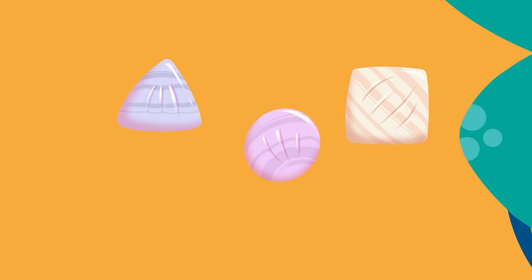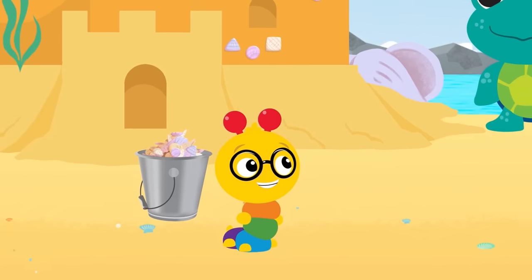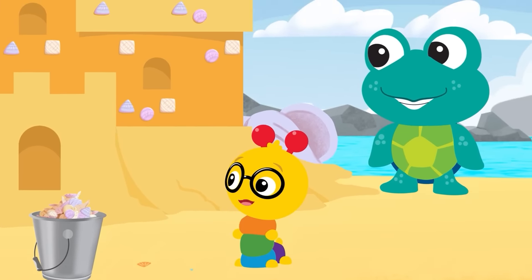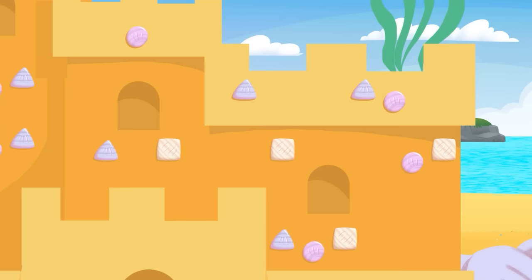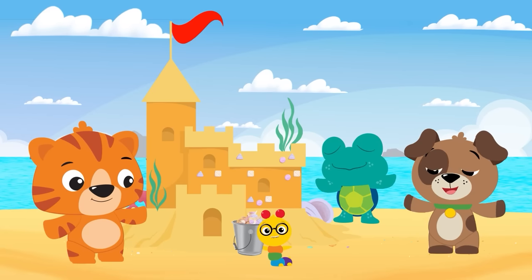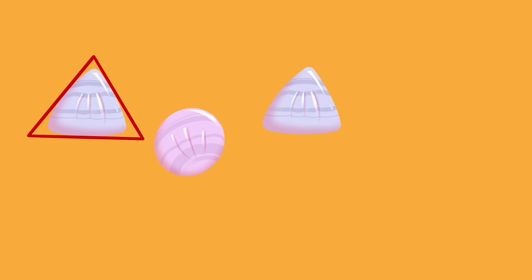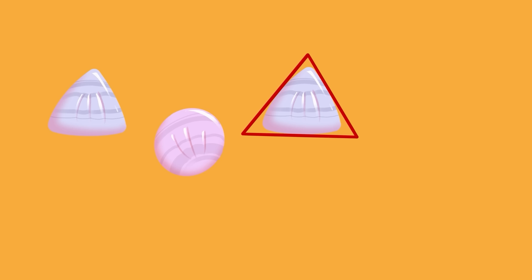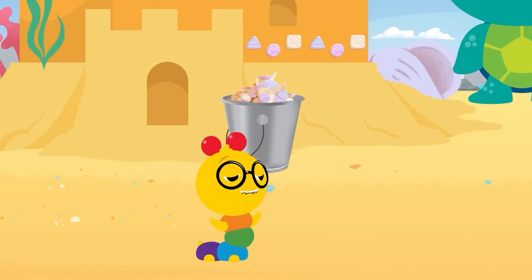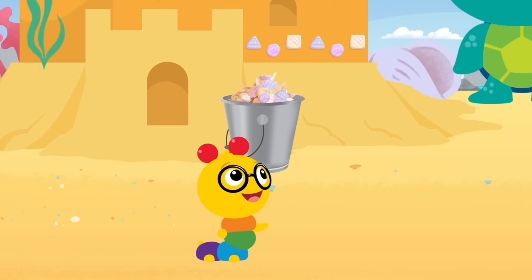What do you guys think? Look, guys — Neptune has used the different shaped shells to make patterns on the walls of the sandcastle. Does anyone want to try to guess what comes next in each pattern? Triangle, circle, triangle — what do you think comes next? Circle! That was fun! Can we try another, Neptune?